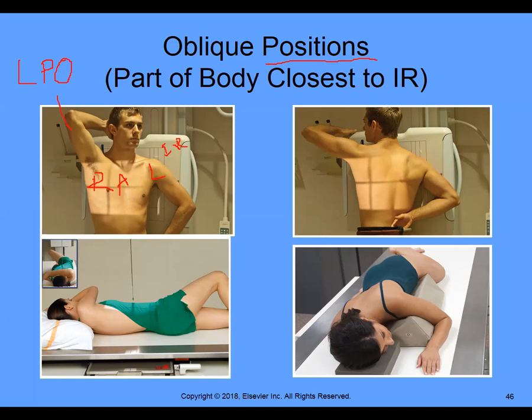Looking at picture two: I identify right and left. She's lying down on her left side, with her posterior side touching the image receptor. It's an oblique. Both picture one and picture two are identifying left posterior oblique. The same position — except picture one is erect and picture two is in the recumbent position.